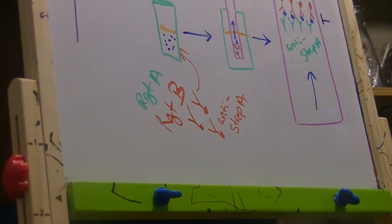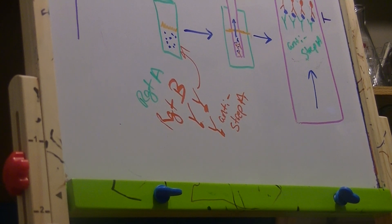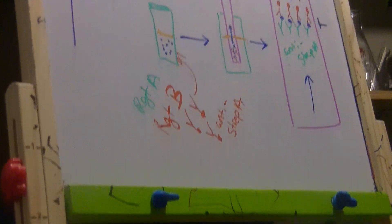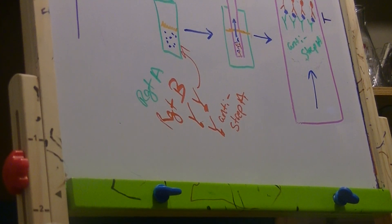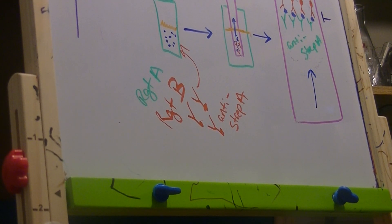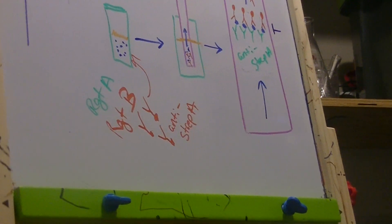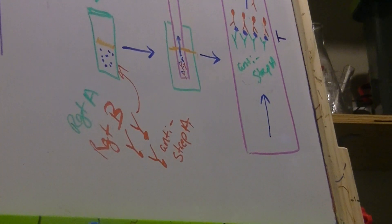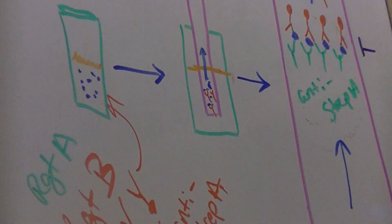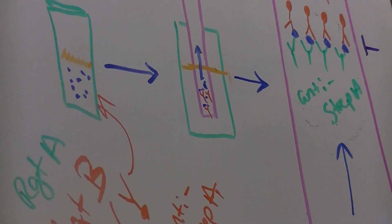The first reagent gets the antigens off of the strep organism so that they can react with the second reagent, which has anti-strep A antibodies. And those antibodies are actually attached to colored particles.